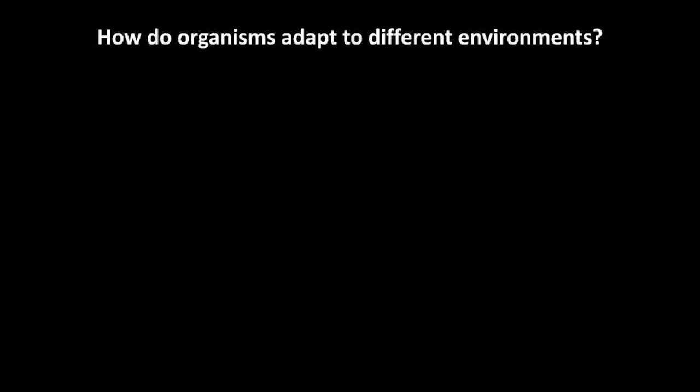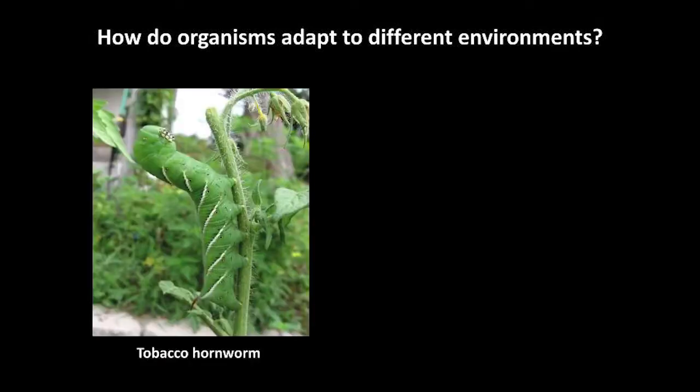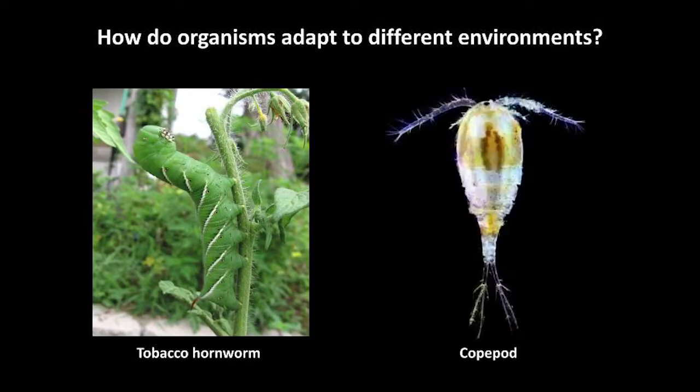So first, just a quick introduction to my research. I study how organisms adapt to changes in their environment and specifically what genetic changes underlie these adaptations. The two organisms that I focus on are the tobacco hornworm caterpillar, which is an insect crop pest found natively in North Carolina, and the copepod, which is a tiny aquatic animal that's somewhat similar to a shrimp.